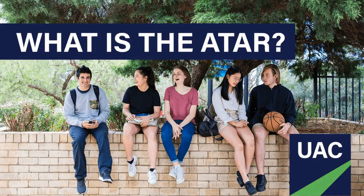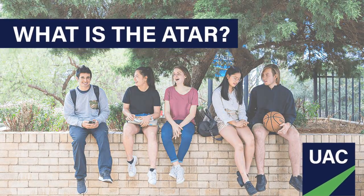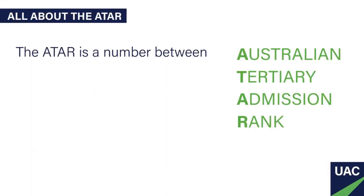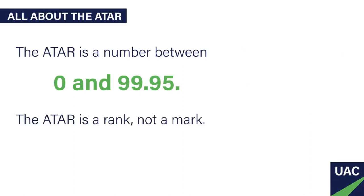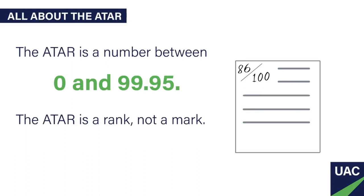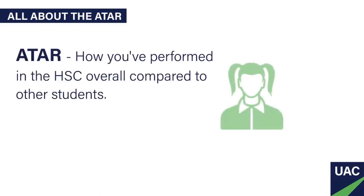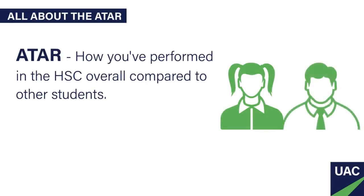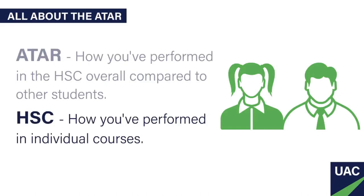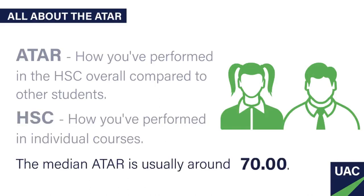The ATAR. Chances are you've given it some thought, wondered what it is exactly and how it's calculated. The ATAR, or Australian Tertiary Admission Rank, is a number between 0 and 99.95. The key thing to know is that it's a rank, and not a mark out of 100. It tells you about how you've gone in the HSC overall compared to other students, no matter what combination of courses you or they have studied. This is different to your HSC marks, which tell you how you've performed in individual courses. The median ATAR is usually around 70.